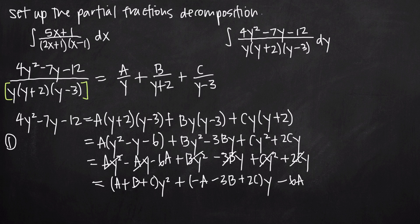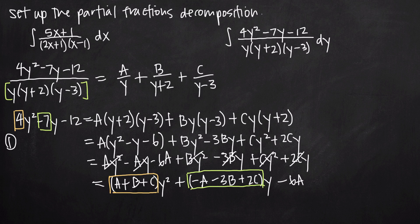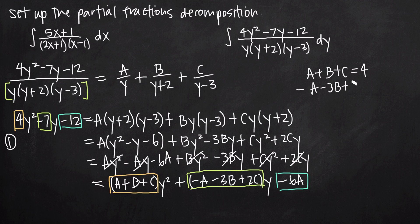Grouping like terms: squared terms give a plus b plus c times y squared; first degree y terms give negative a minus 3b plus 2c times y; and the constant is negative 6a. Comparing coefficients on both sides: the y squared coefficient gives a plus b plus c equals 4; the first degree y coefficient gives negative a minus 3b plus 2c equals negative 7; and the constant gives negative 6a equals negative 12. Solving the third equation immediately: a equals 2.